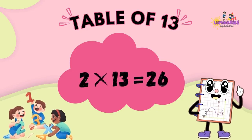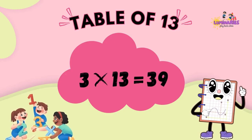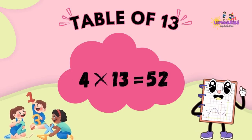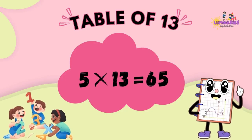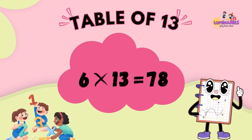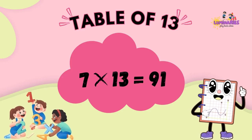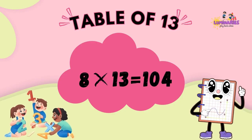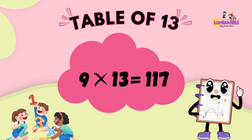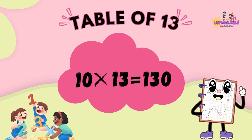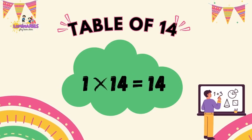Table of 13. 1 x 13 is 13. 2 x 13 is 26. 3 x 13 is 39. 4 x 13 is 52. 5 x 13 is 65. 6 x 13 is 78. 7 x 13 is 91. 8 x 13 is 104. 9 x 13 is 117. 10 x 13 is 130.